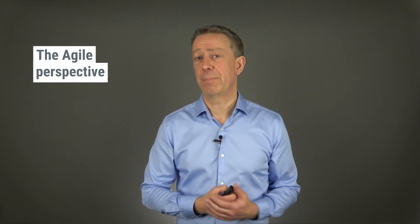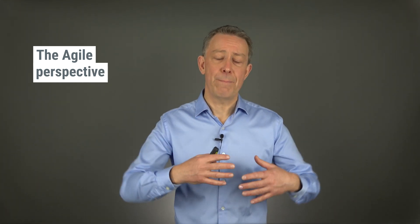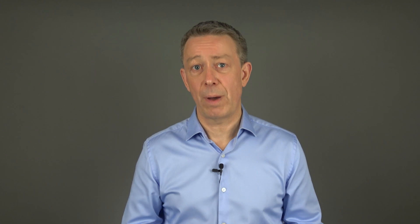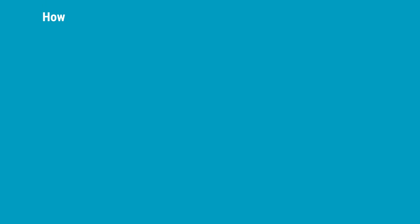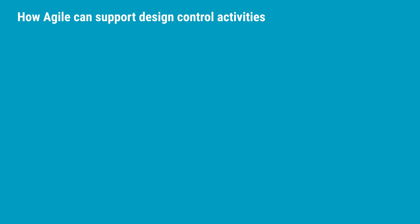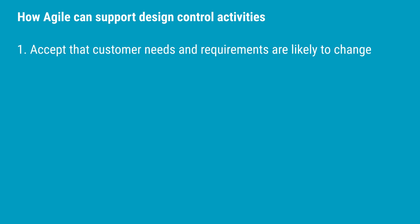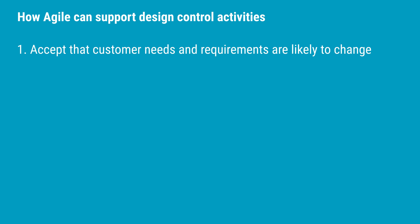Agile development methods were created due to a poor match between software development and traditional project management methods. If you develop a user interface with many user interactions, it is challenging to define all requirements before starting the work. Even if you try very hard, the end result might not match expectations because stakeholders tend to change their minds when they reach the look and feel phase. In TIR45 this is stated as: customer needs and requirements are likely to change. Agile embraces changes, making change management integral to an agile development process.